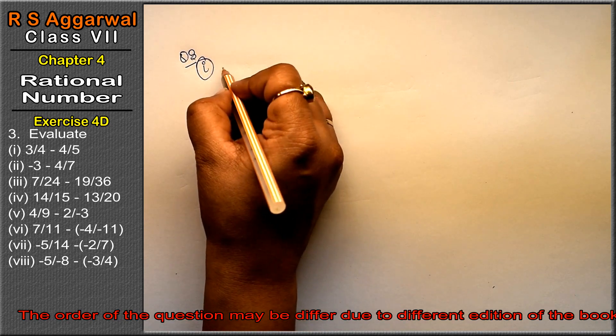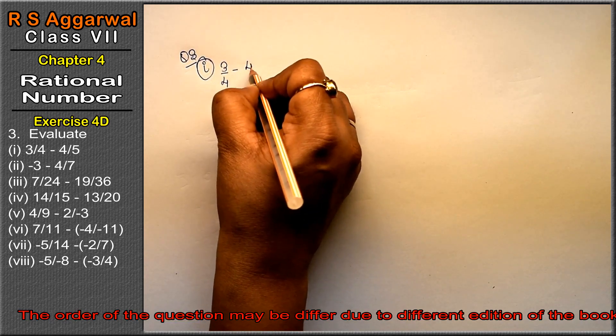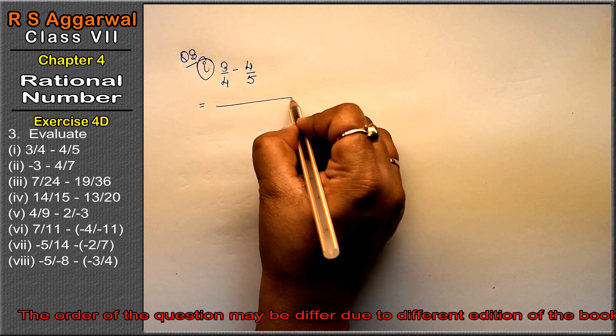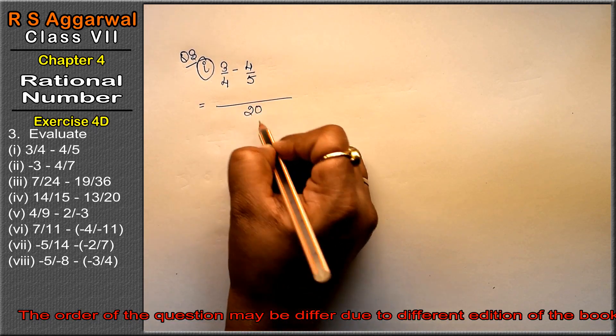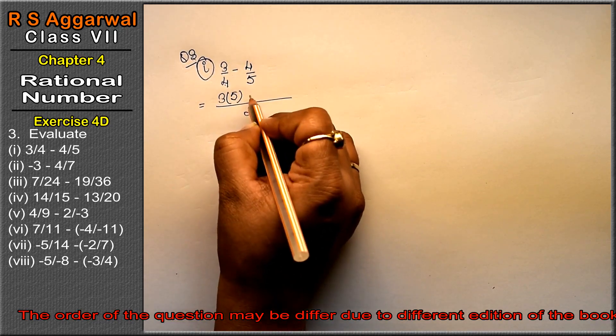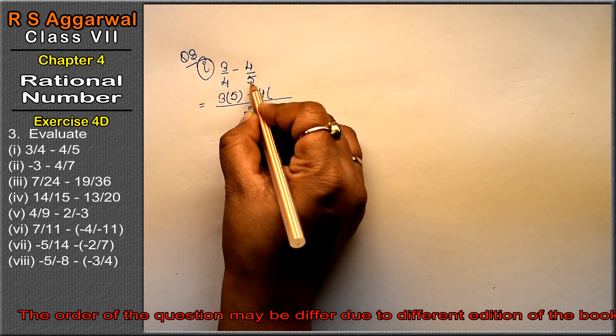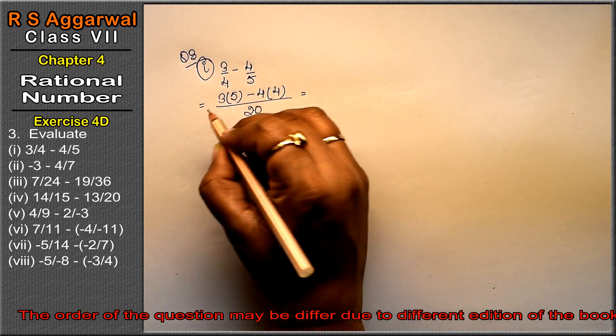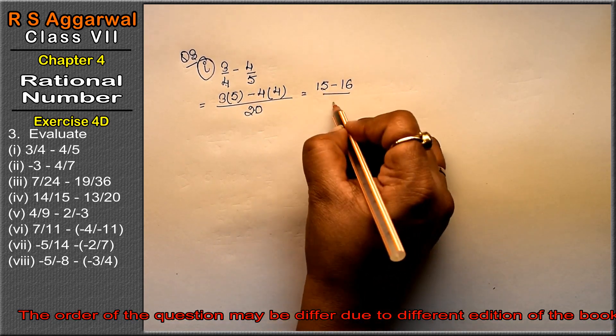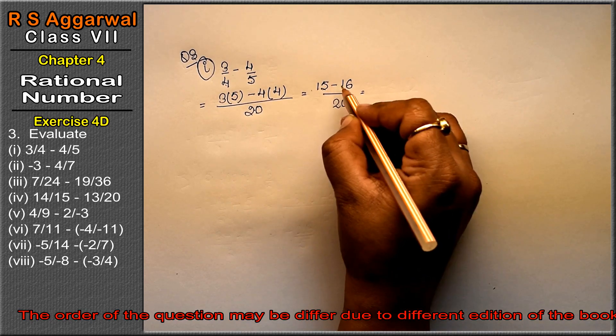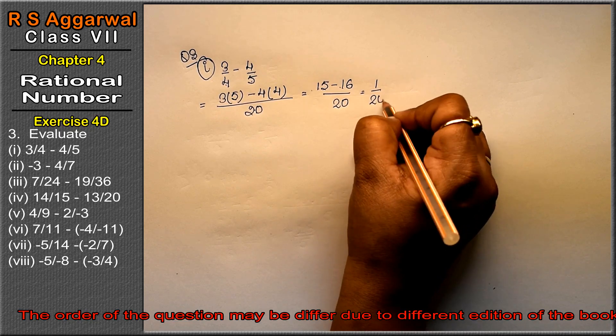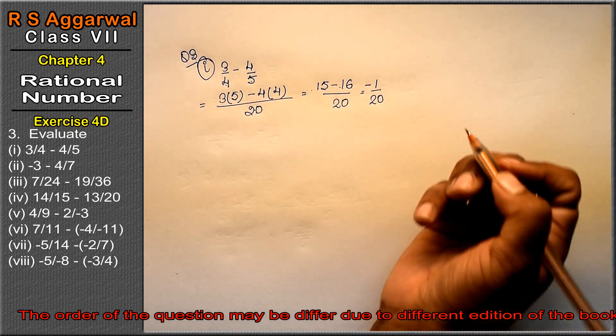First part is 3 upon 4 minus 4 upon 5. We have to subtract. Let's take LCM. Both unique numbers give us 20. 4 times 5 is 20, minus 4 as it is. 5 times 4 is 20. So 3 times 5 is 15 minus 16 upon 20. Both opposite signs have subtracted. 16 from 15 is 1 upon 20, but the sign of the bigger number is minus, so the answer is minus 1 upon 20.